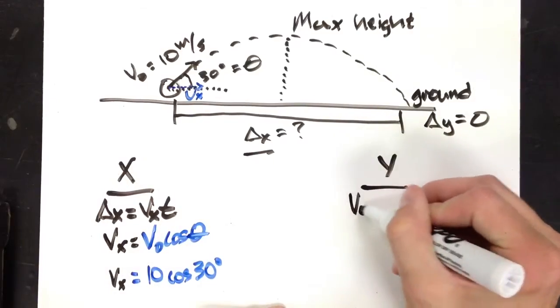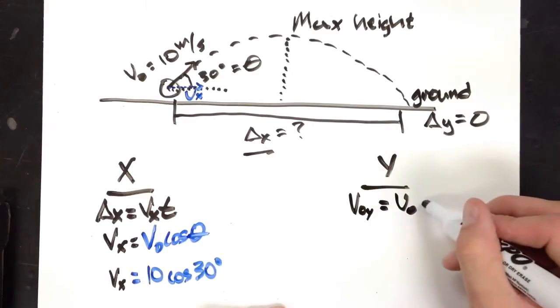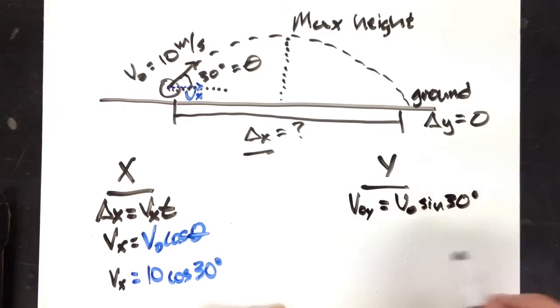So v0y is not 0. It's going to be v0 sine of 30 degrees. Easily calculated. 10 sine 30.